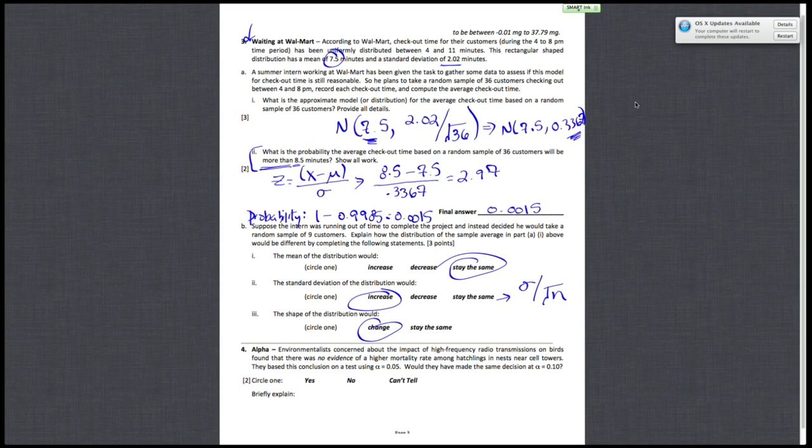Alright, so next, question 4 just deals with p-values and alphas. So environmentalists concerned about the impact of high frequency radio transmissions on birds found that there was no evidence of a higher mortality rate among hatchlings in nests near cell towers. They based this conclusion on a test using alpha equals 0.05.